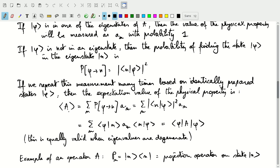That expectation value will be equal to the probability of finding or measuring an eigenstate n times the value or the eigenvalue of n.